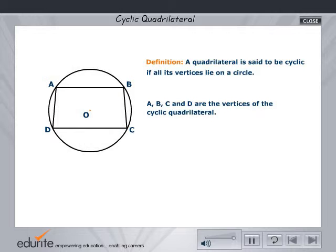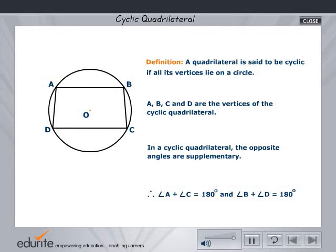Now, let us know the important property of a cyclic quadrilateral. In a cyclic quadrilateral, the opposite angles are supplementary. Therefore, in the figure, angle A plus angle C is equal to 180 degrees and angle B plus angle D is equal to 180 degrees.